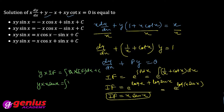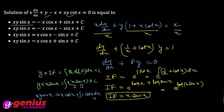Applying integration by parts — first function x, second function sin x. Result: x times (minus cos x) minus differentiation of x times integration of (minus cos x), which gives minus x cos x plus sin x plus c. So the final answer is y times x sin x equals minus x cos x plus sin x plus c.